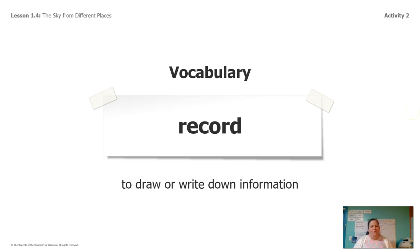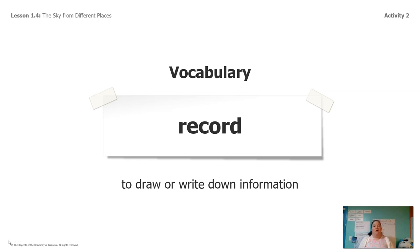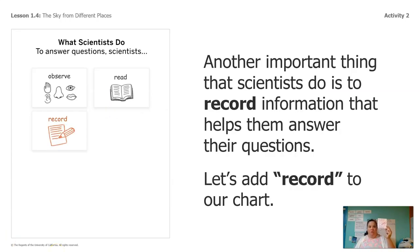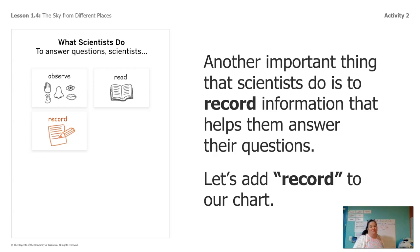While we're observing these different webcams, we need to record — so draw or write down the information that we see. If you have a piece of paper and a pencil, or if you have the packet that goes along with this unit, this is the time you want to have those out so you can record. If you don't have those things, don't worry — I'm going to be recording on the wall back here. We are also going to put 'record' on our what-scientists-do chart, because recording is a really important thing that scientists do. We have observe, reading, and record. Today we're going to observe and record.